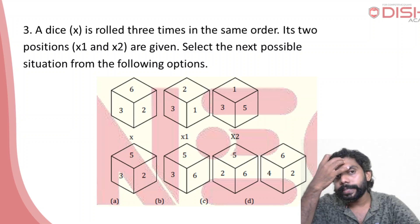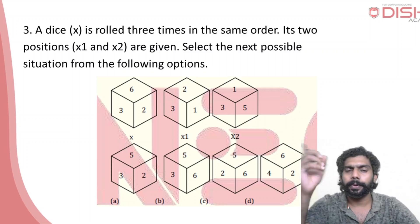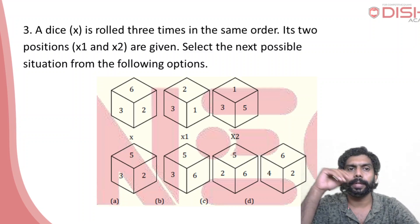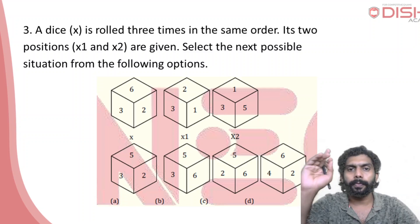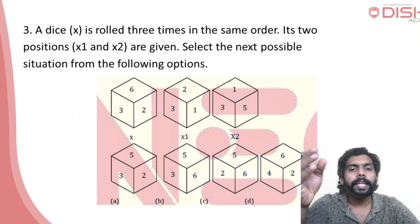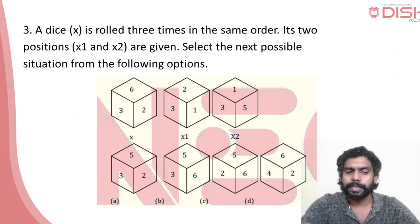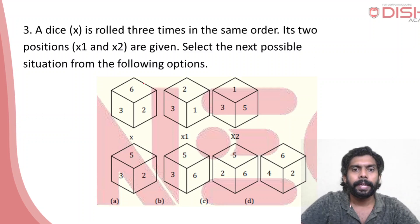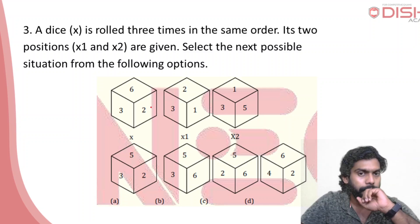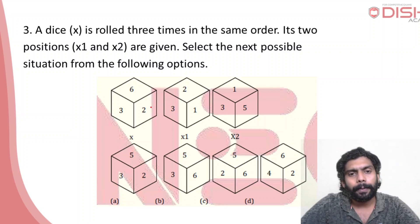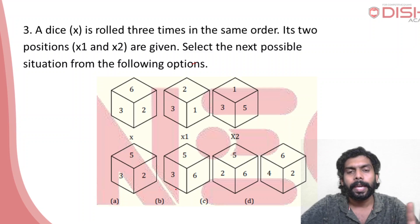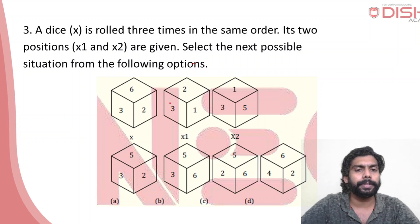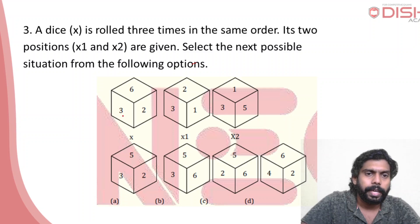Let's look at the next question. A die X is rolled three times in the same order, giving two positions X1 and X2. Select the next possible situation from the following options. This is a dice question. The concept used here is the opposite. We have two views: here are 3 and here are 2.